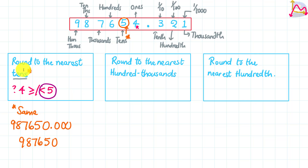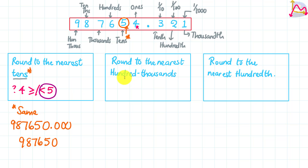That is how you round to the nearest tens. The next question asks us to round to the nearest hundred thousands. Please use the same strategy — it will be helpful — but there will be a little twist here, because now we are going to be focusing on our hundred thousands as the target digit.